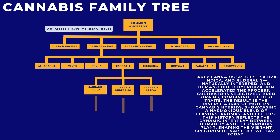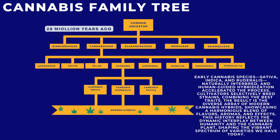Early cannabis species — sativa, indica, and ruderalis — naturally interbred, and human-guided hybridization accelerated the process. Cultivators selectively bred strains, combining the best traits. The result is the diverse array of modern cannabis hybrids, showcasing a harmonious blend of flavors, aromas, and effects. This history reflects the dynamic interplay between humanity and the cannabis plant, shaping the vibrant spectrum of varieties we have today.